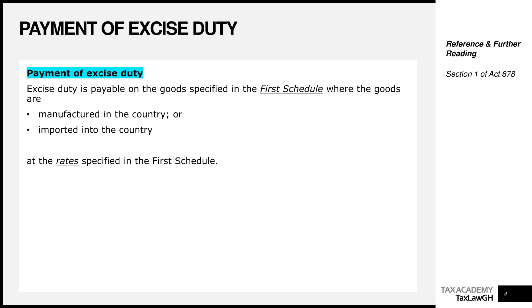Excise duty is payable on goods specified in the First Schedule of the Excise Duty Act in two cases: either when the goods are manufactured in Ghana, or when the goods are imported into Ghana. Any time you see an item on that list and that item is either manufactured locally in Ghana or imported into Ghana, excise duty will apply. If you are not on that list, no excise duty will apply.